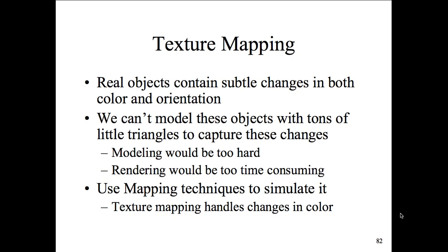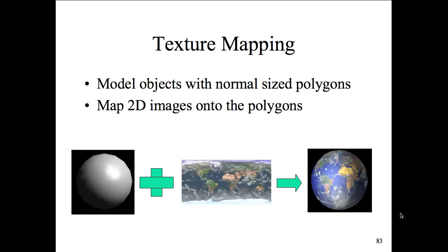Texture mapping handles changes in color. Here's an example: we have a model with normal-sized polygons, then we map a 2D image onto those polygons — taking a picture and mapping it onto the surface to get more realistic coloring and shaping. The texture also captures imperfections, inconsistencies, and detail that can't be shown polygon by polygon. This adds overall realism. There is a cost though — you're storing a large image in a graphics file and mapping it, so you want to use small, lightweight images.